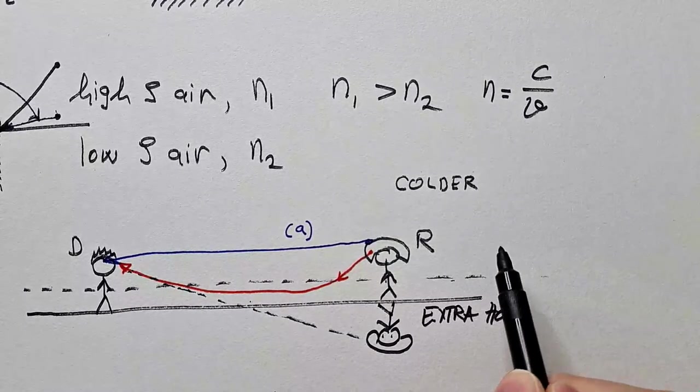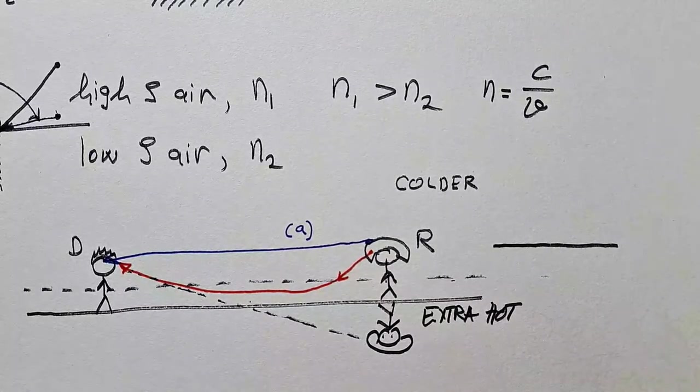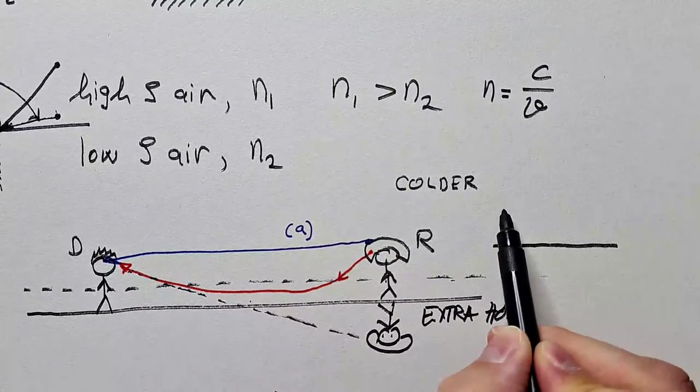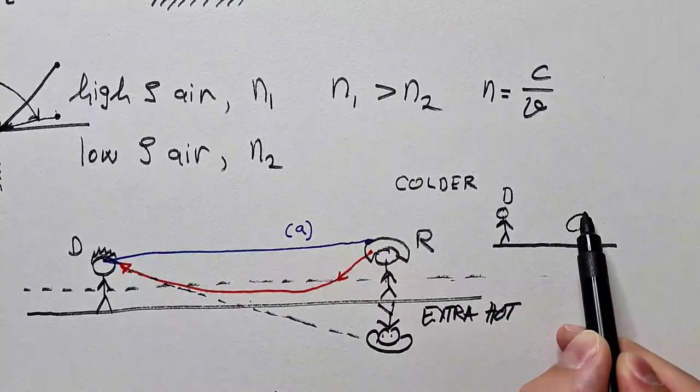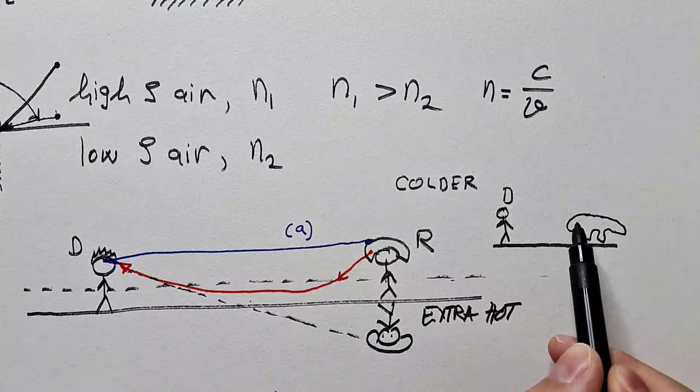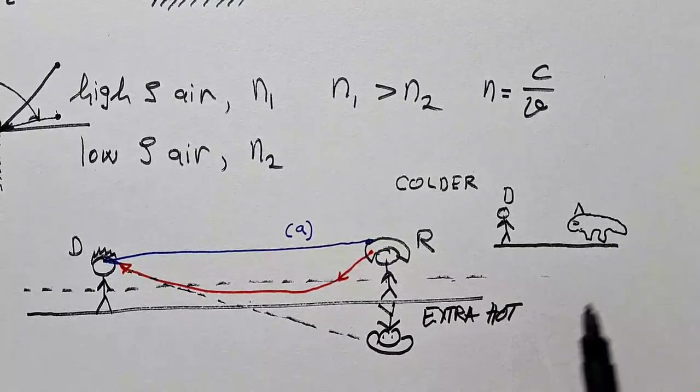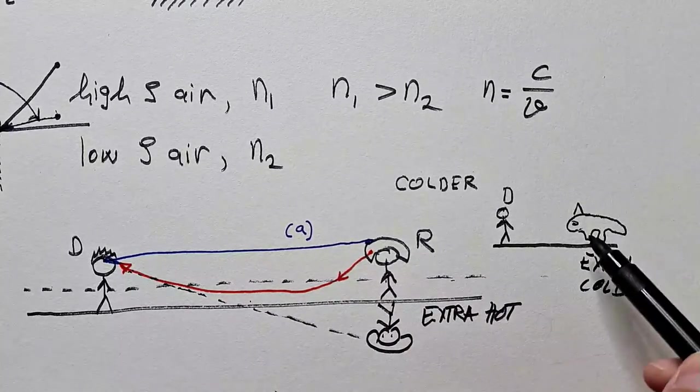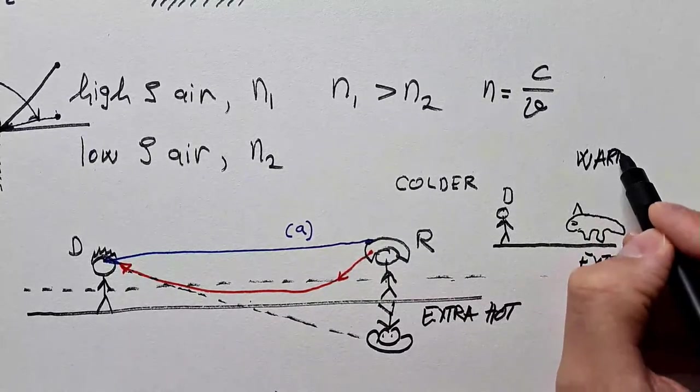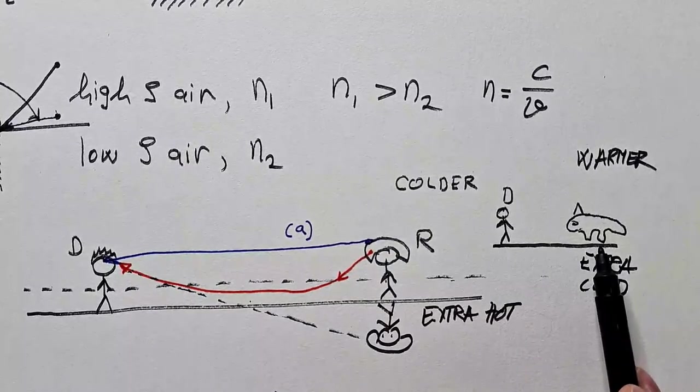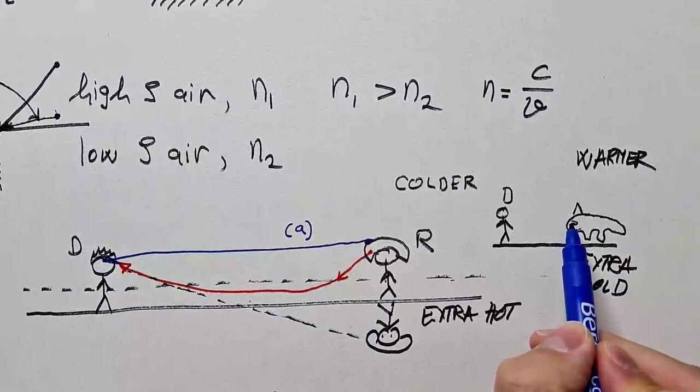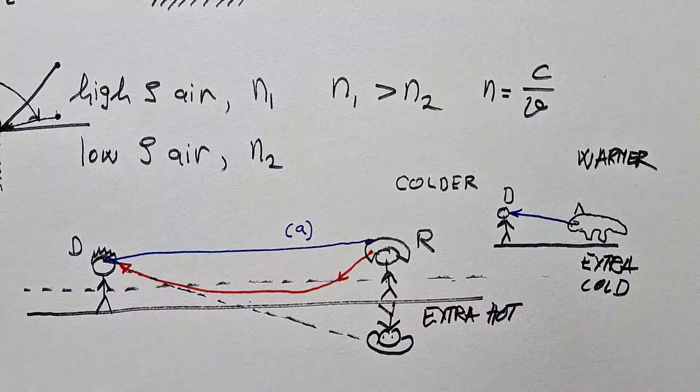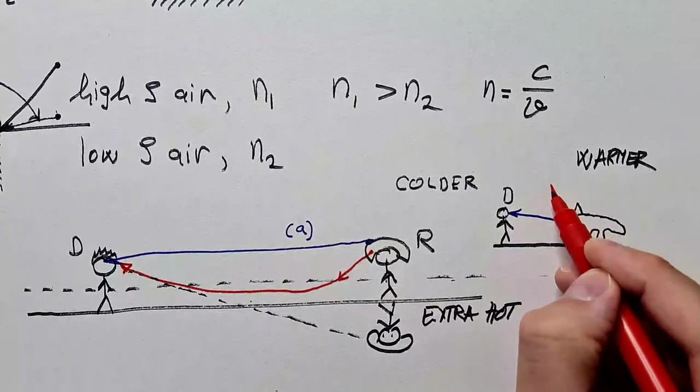As a side note, can you see how this can also happen if you are in a very cold region? Let's say this is North Pole. D is over here, and a polar bear is some distance away. Here is extra cold now. And therefore, some distance away from the surface is warmer. Again, warmer in respect to what is very close to the surface. Now, there is a light ray coming from this bear into my eye, and there is no problem. I see bear. But at the same time, there is a light ray going up into the sky.